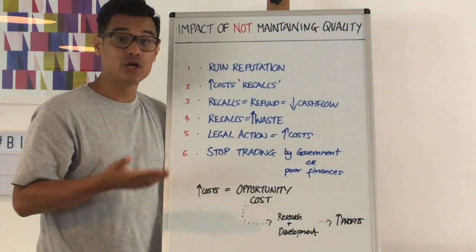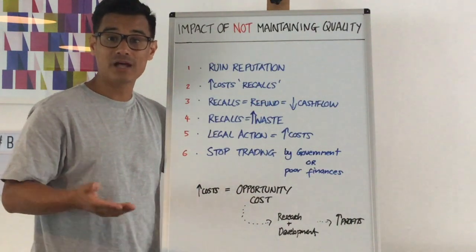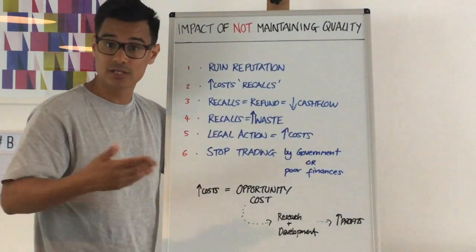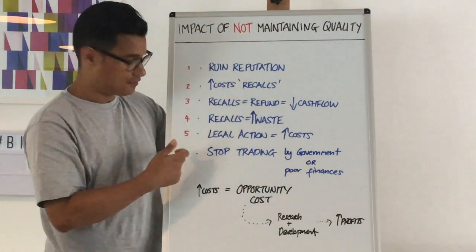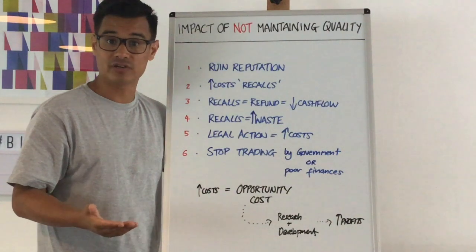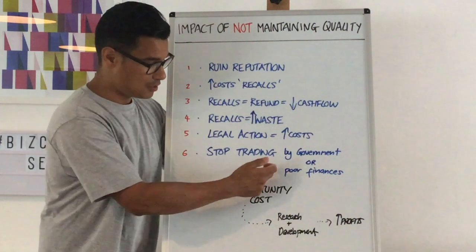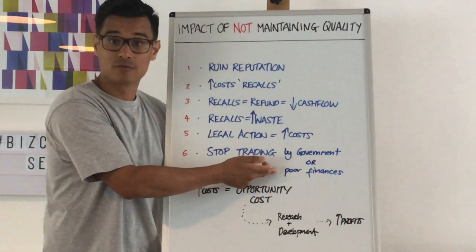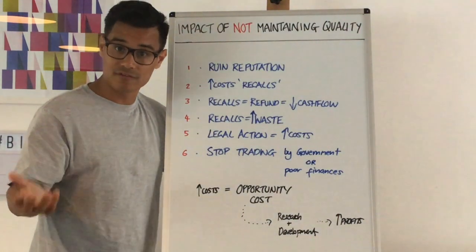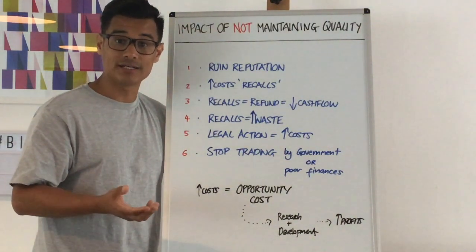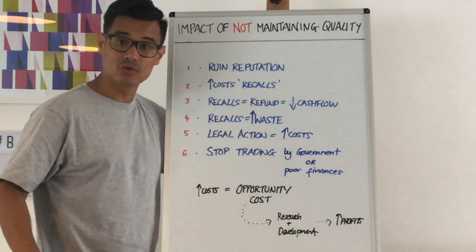Number six is stop trading. You could actually be forced to stop trading by the government — for example, if you're a food outlet with hygiene issues, the local council might shut you down. Or because of reasons one to five, the costs and ruined cash flow mean you simply don't have enough finances to continue. Number six is the worst case scenario and where you should lead to in your answer.